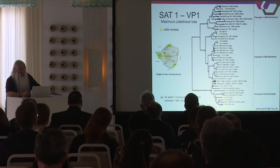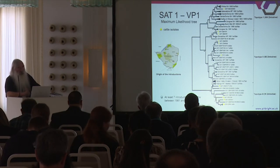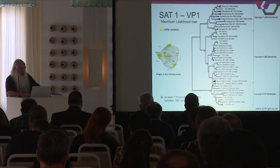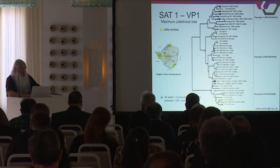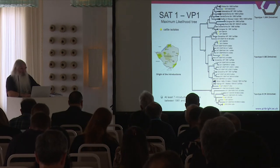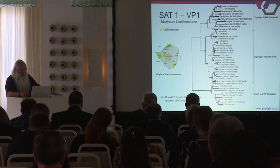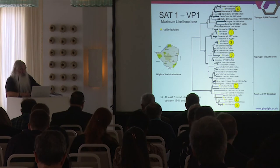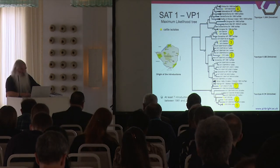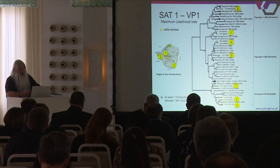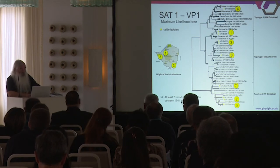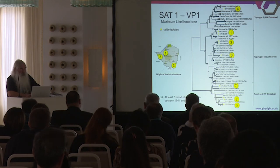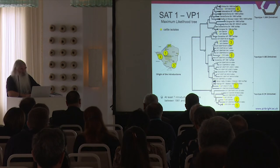One practical use of this data is comparing cattle outbreak isolates against this backbone of buffalo isolates. The yellow nodes represent cattle isolates, while all the rest are buffalo. We can see a number of distinct viruses, and we think there are at least seven introductions into cattle between 1981 and 2017 — distinct from each other — which we believe were introduced from the buffalo population, and we can even tell whereabouts they've come from: three from western Zimbabwe, three from the southeast, and one from the northwest.